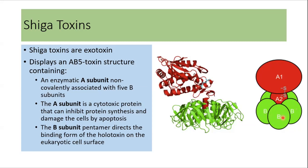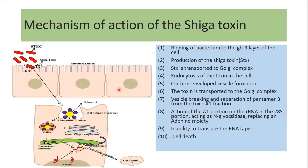The B subunit is a pentamer that mediates binding to globotriaosylceramide receptors on eukaryotic cell surfaces. This picture shows the mechanism of action of Shiga toxin. When the bacteria produce Shiga toxin, it undergoes endocytosis via a clathrin-mediated mechanism, is transported to the Golgi complex and then to the endoplasmic reticulum, and ultimately inhibits protein synthesis, leading to cell death.